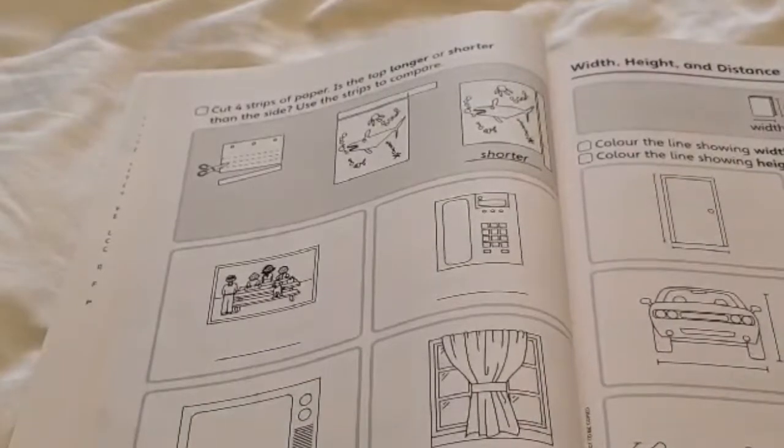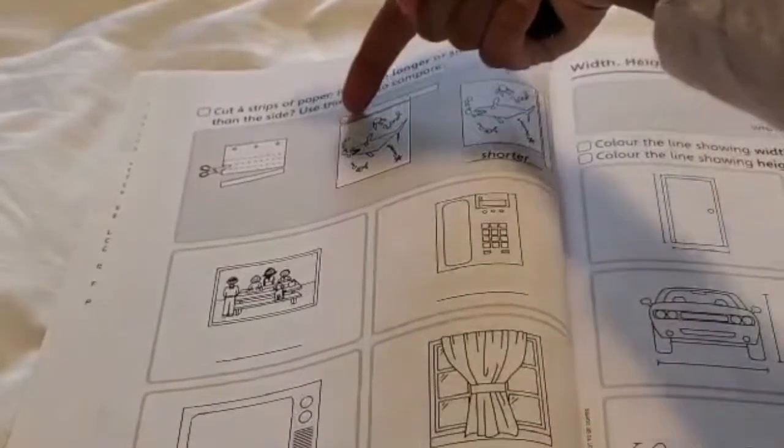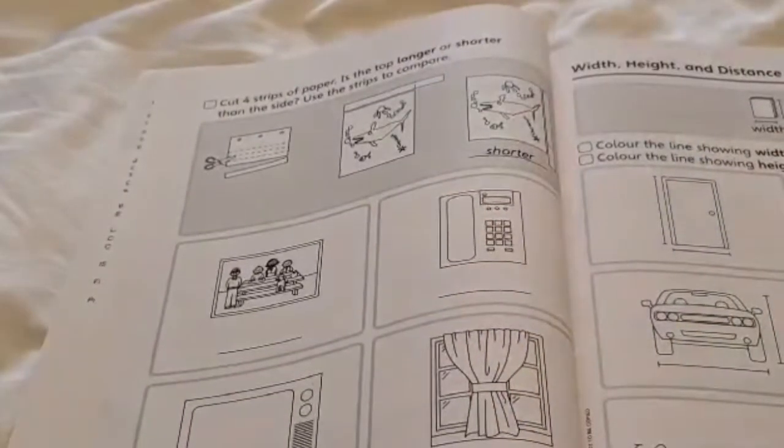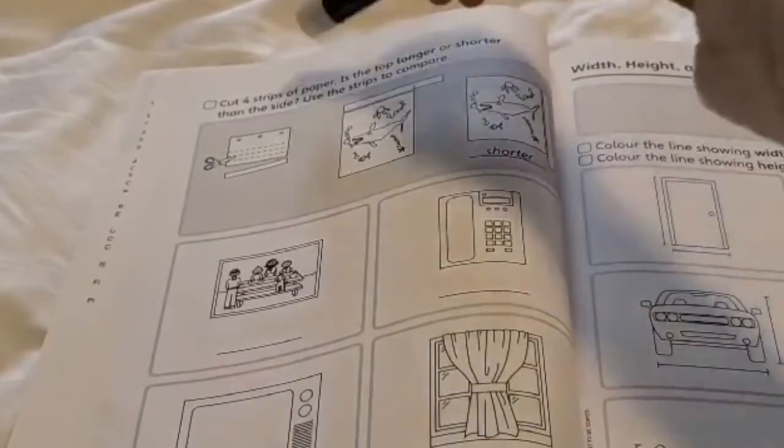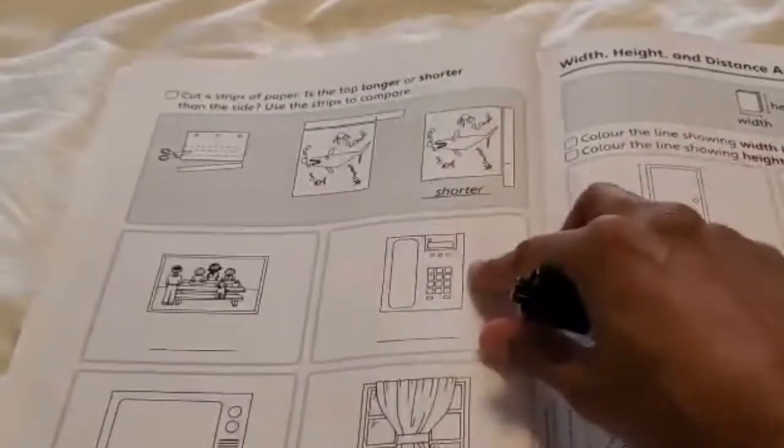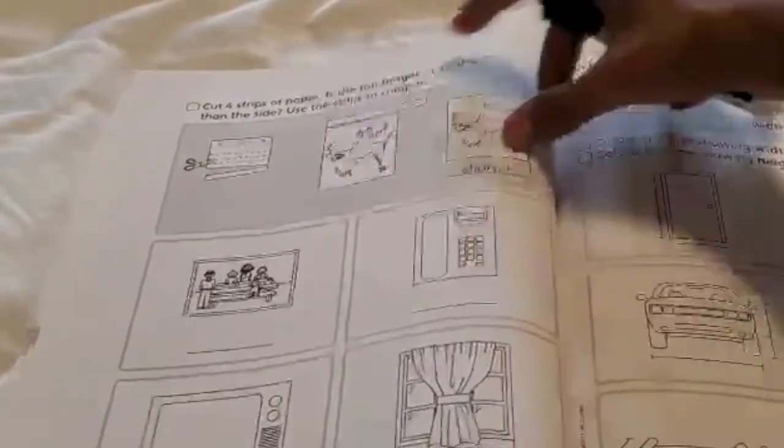You're going to use your strip of paper to measure how long the top is and how long the side of your picture is. Then you need to tell me, is the top longer or shorter? So here in the example, they measured the top and then they measured the side.